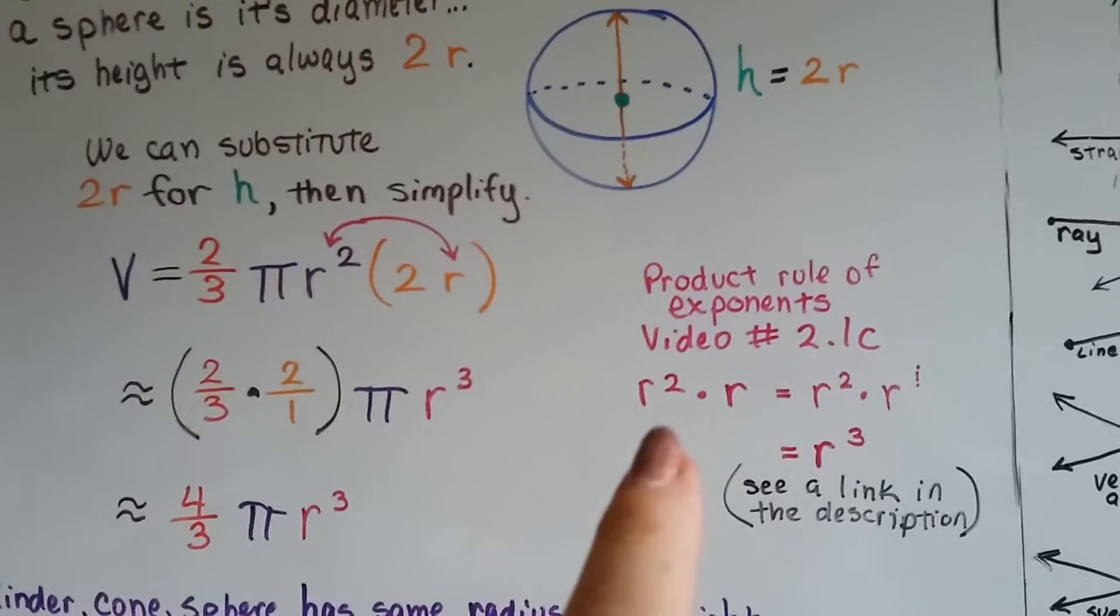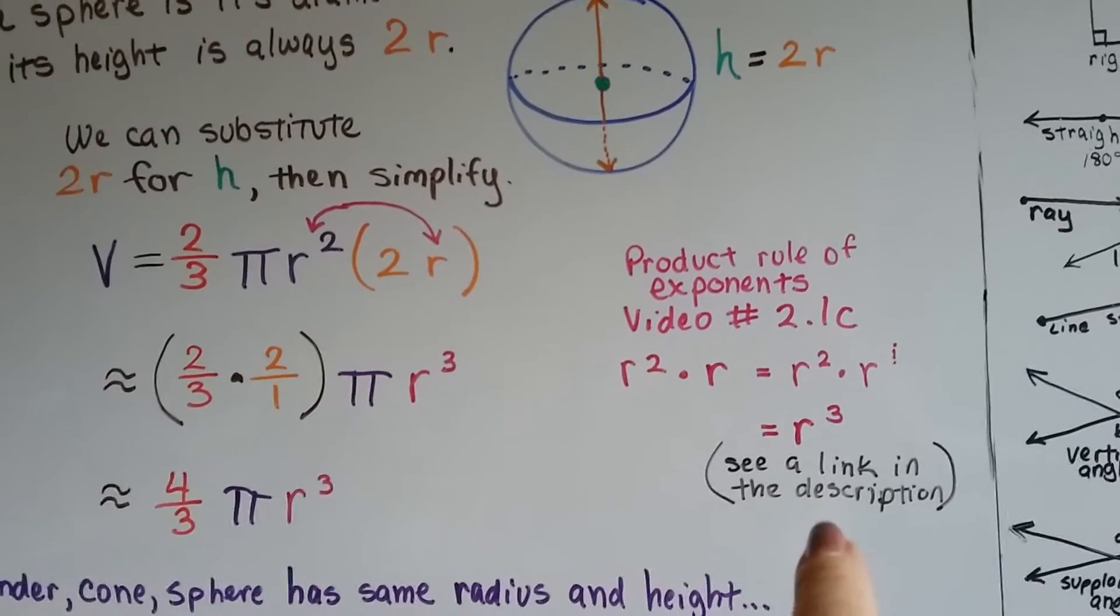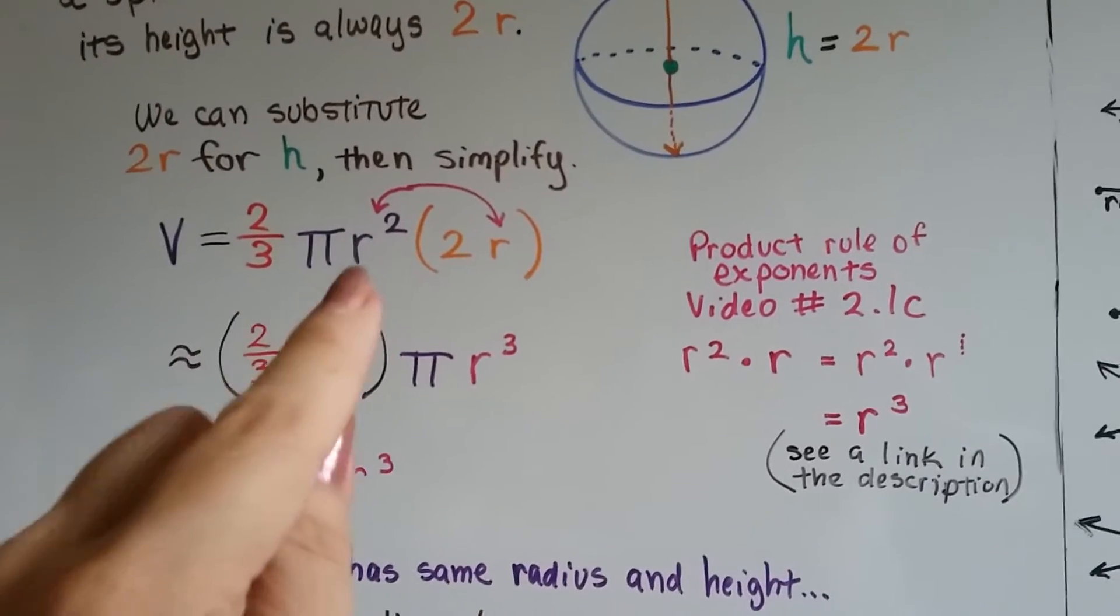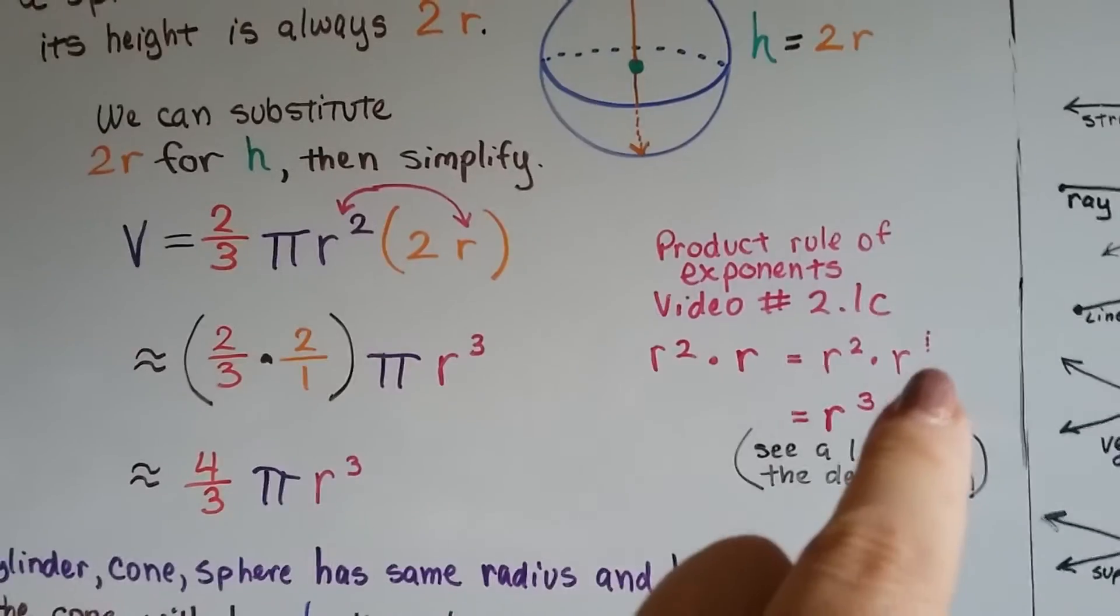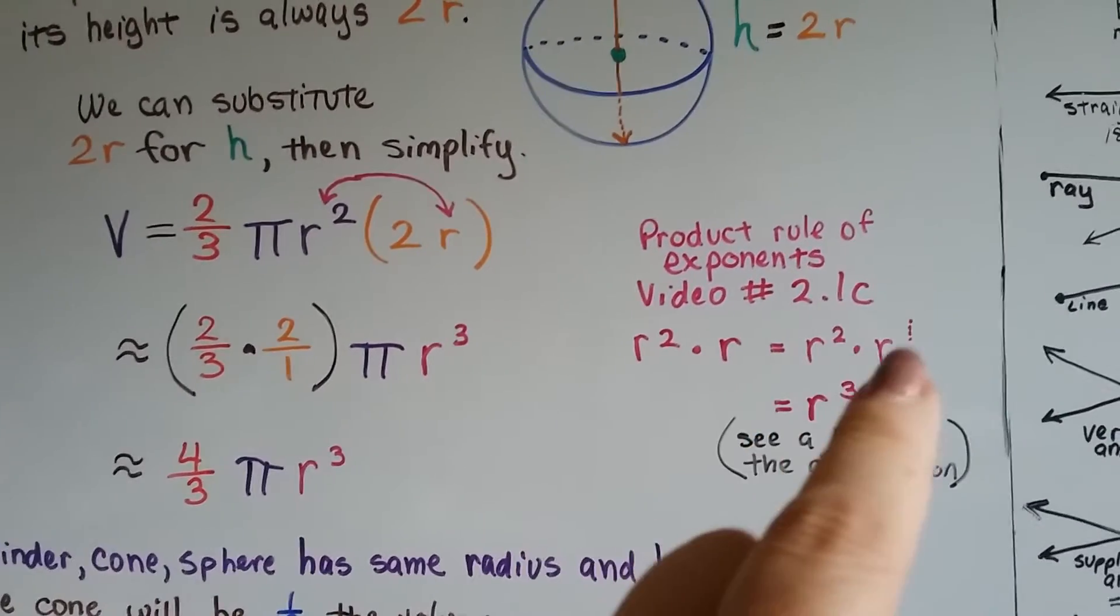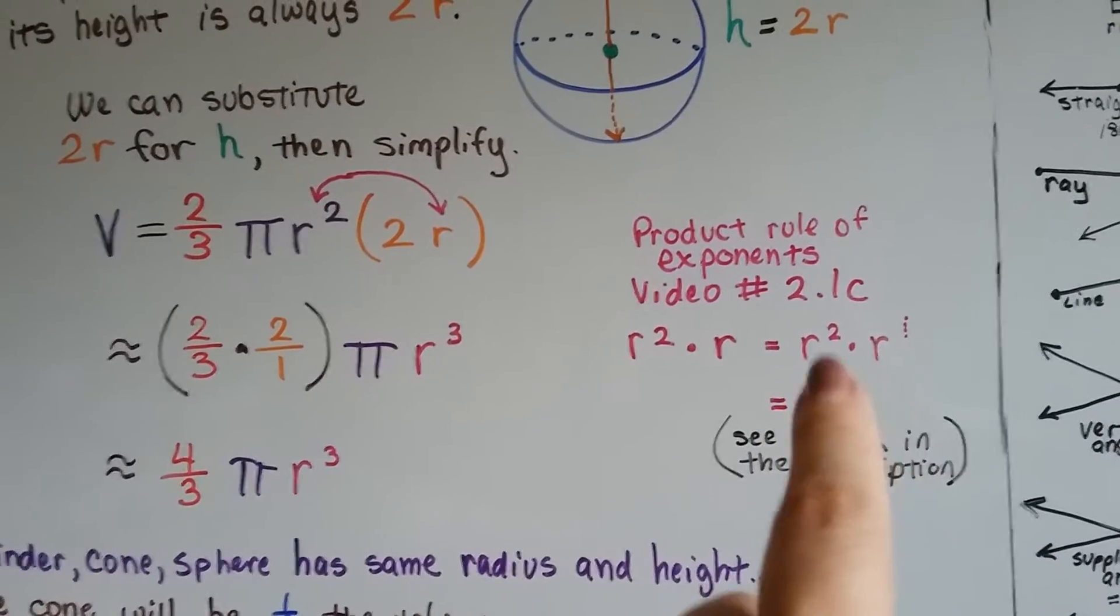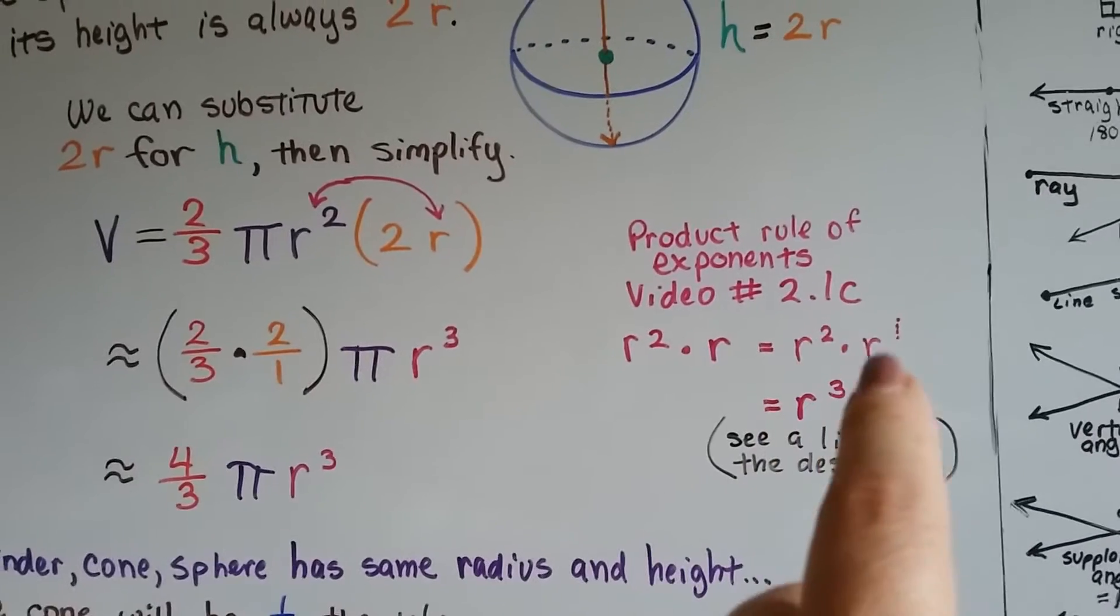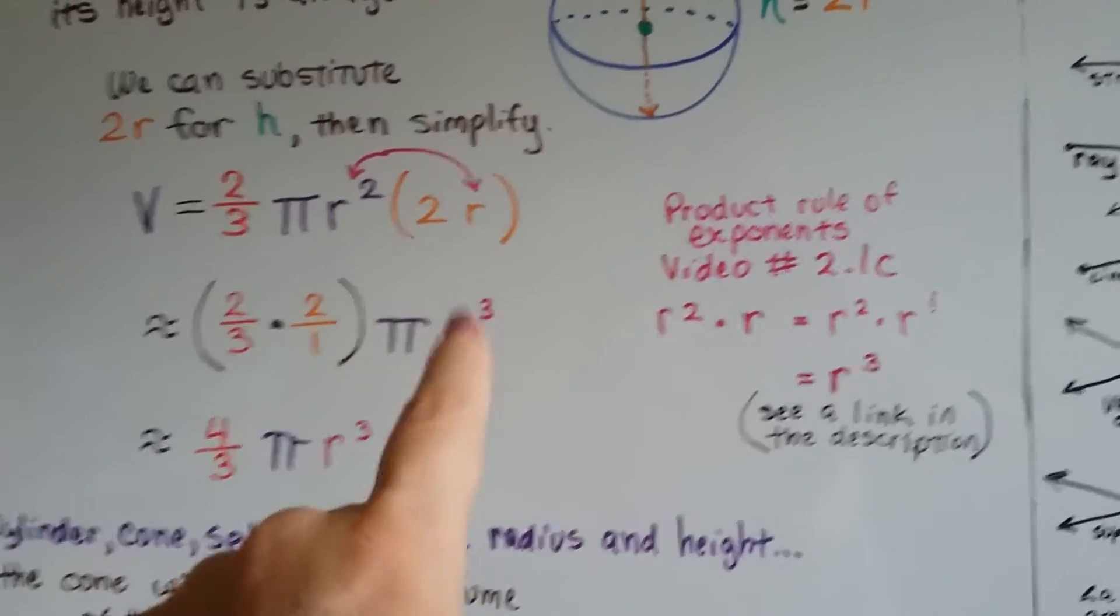Now, do you remember the product rule of exponents in the beginning of eighth grade? It's video number 2.1c, and there is going to be a link in the description of this video for you to just click on that if you don't know about it. If we've got r squared and a r, remember there's an invisible one there, our buddy the invisible one. So there's one r and there's two r's. And because they have like bases, we just add the exponents. So that would be three r's. If we've got r times r times r, that's three r's. It's r to the third power. That's r cubed.